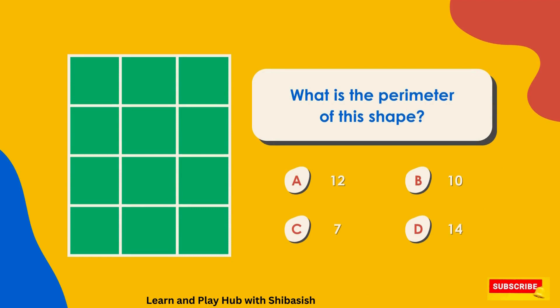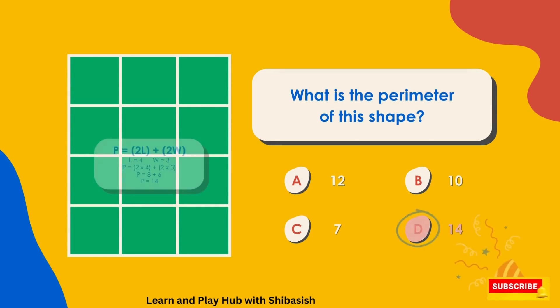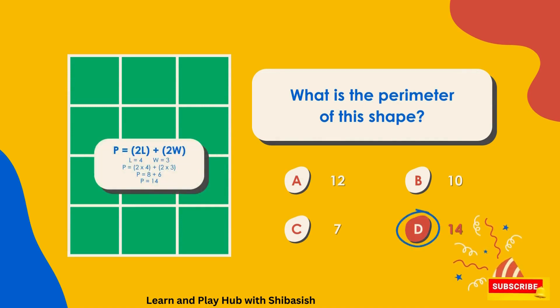What is the perimeter of the shape? A equals 12, B equals 10, C equals 7, D equals 14. The correct answer is option D: 14.